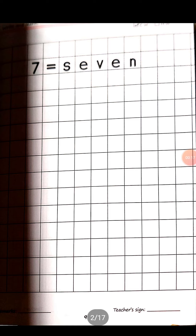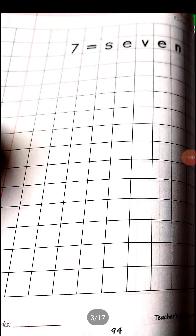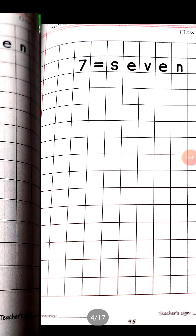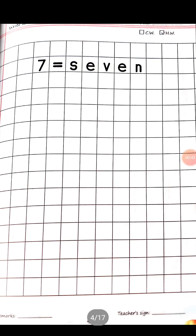Write down today's date and click the CW. This is number 7 — what is the spelling of 7? S-E-V-E-N. Skip one line, then write. Page number 93 and 94 is your CW, and 95 and 96 is your HW.